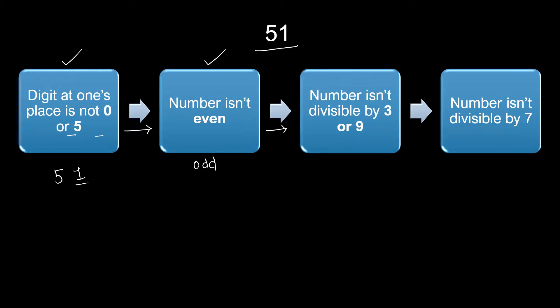We move to the next level to check divisibility by 3 or 9. For this, you simply add the digits of the number, which comes out to be 6. 6 is divisible by 3, so this level is not crossed. That means this is not a prime number.